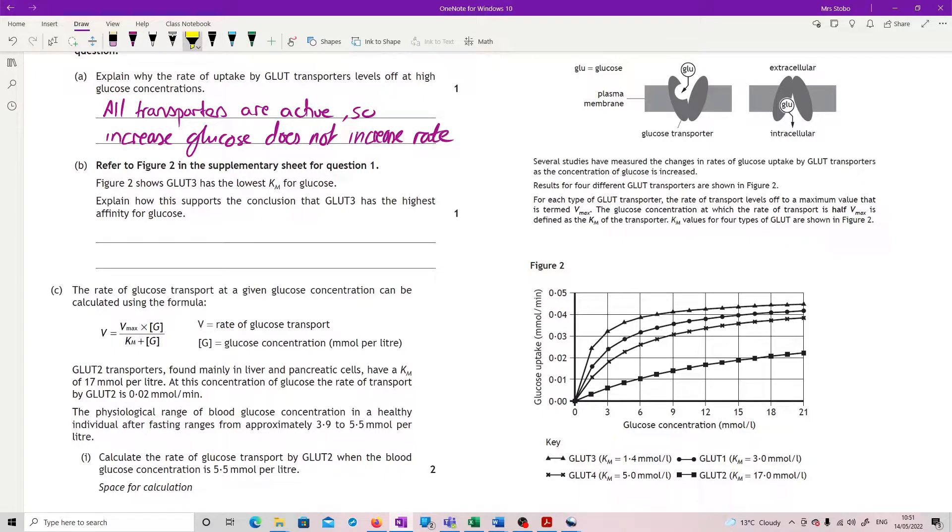The glucose concentration at which the rate of transport is half Vmax is defined as Km of the transporter. Okay, so what we're saying is that's telling you how fast you managed to get half of the maximum speed. So the smaller that number is, the quicker you're managing to get to half of the maximum, and that's basically what you have to recognize.